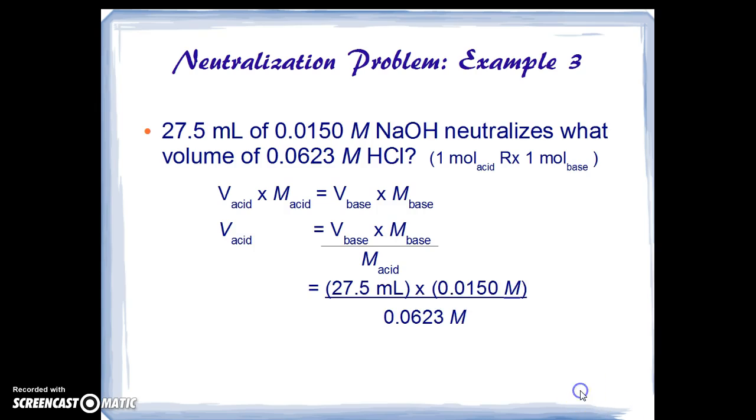We can then plug in numbers and units and we see 27.5 milliliters is multiplied by 0.0150 molar. There's your concentrated solution of sodium hydroxide. Actually it's kind of dilute. And how much will it neutralize of the 0.0623 molar? 6.62 milliliters.